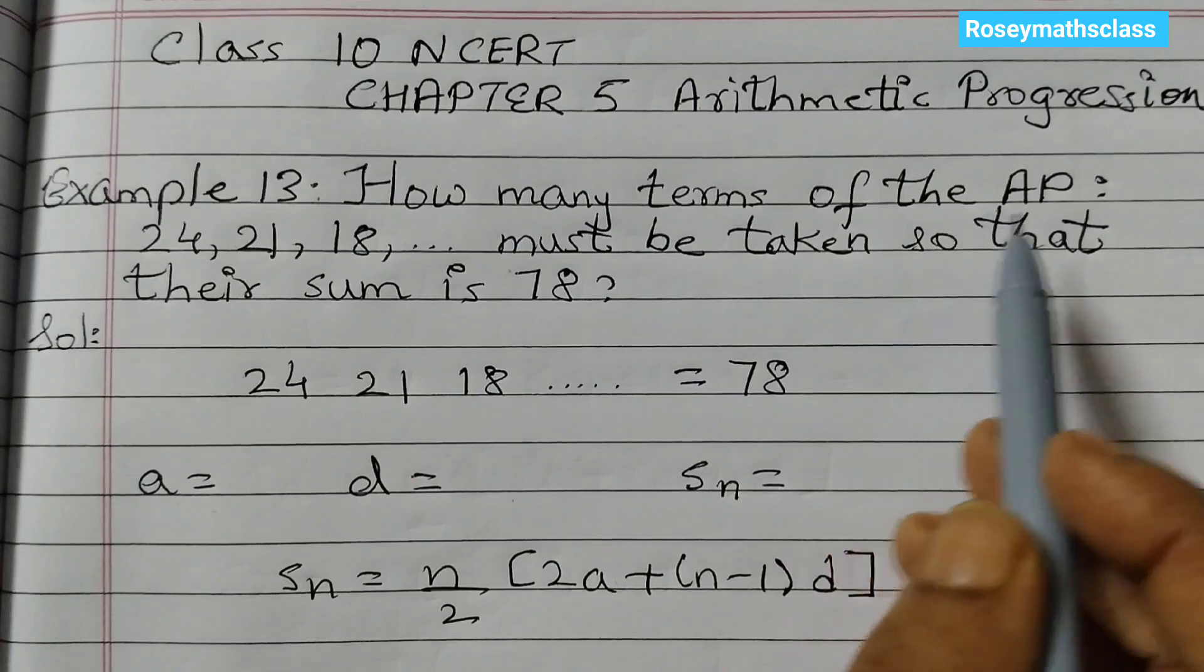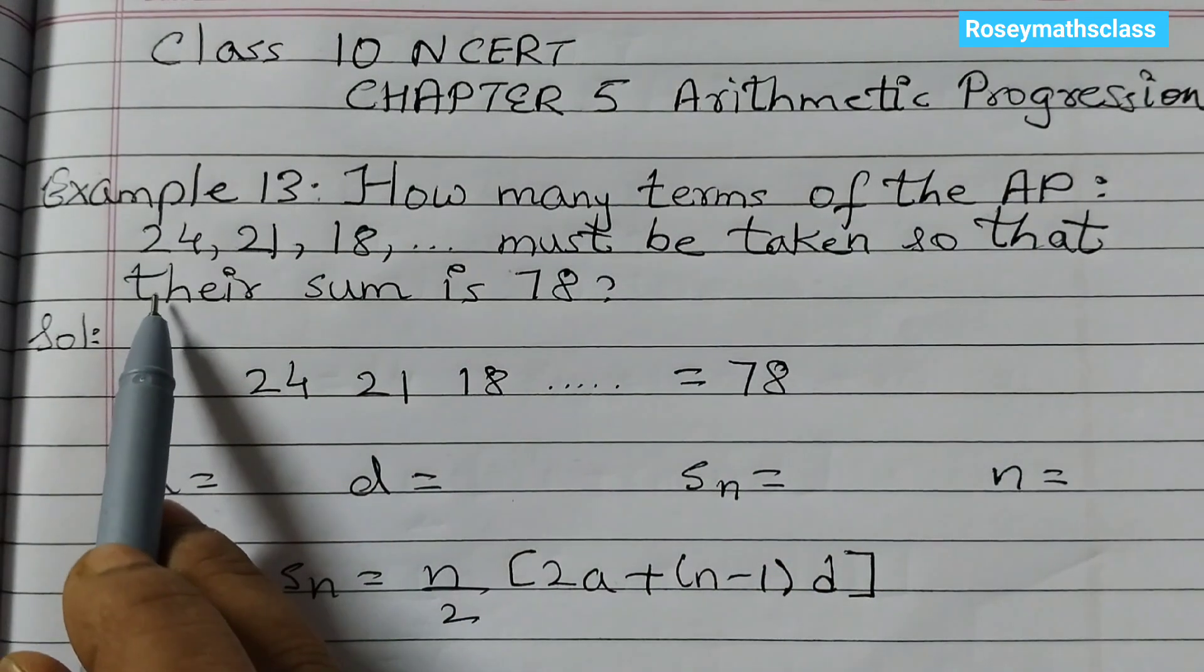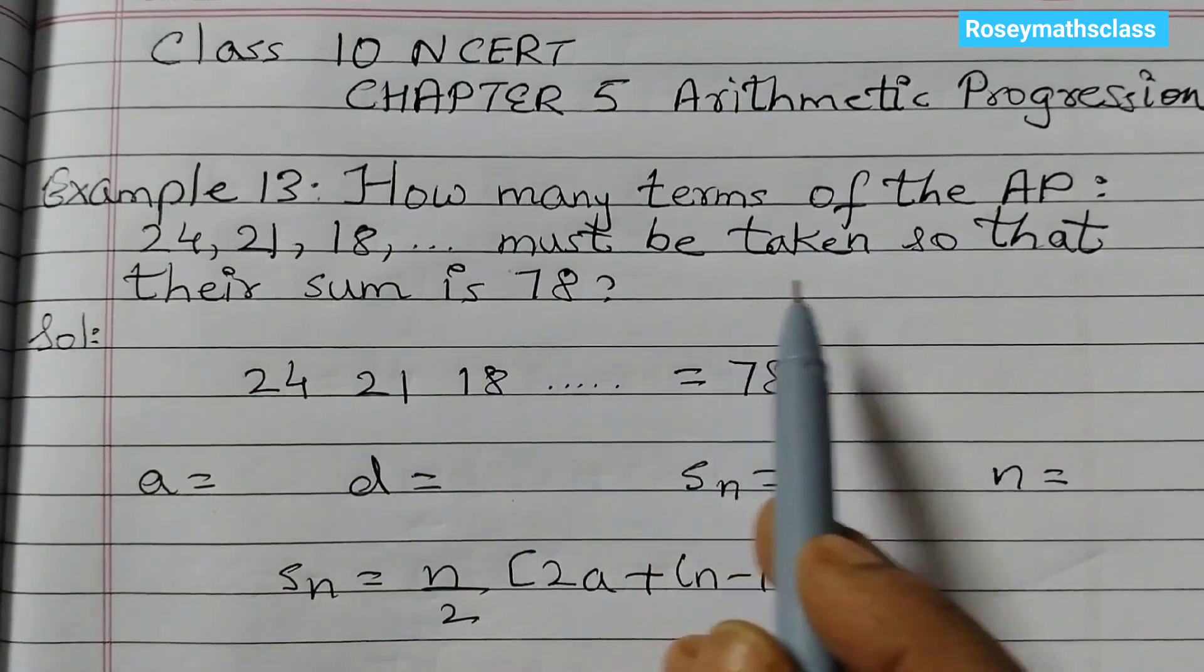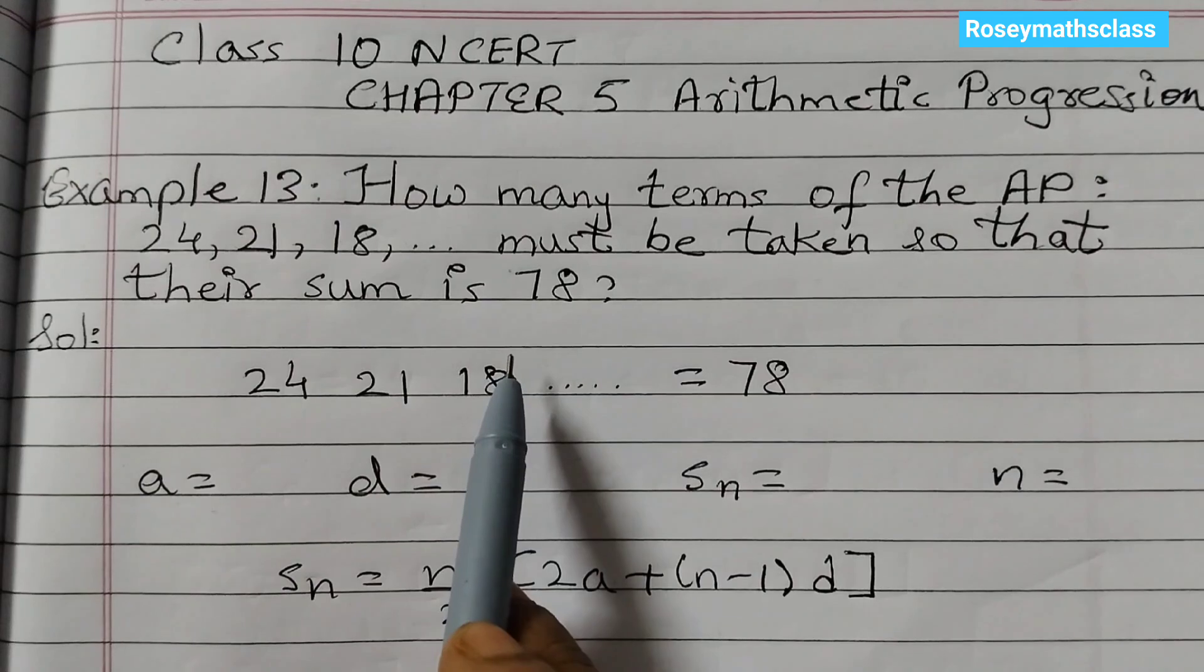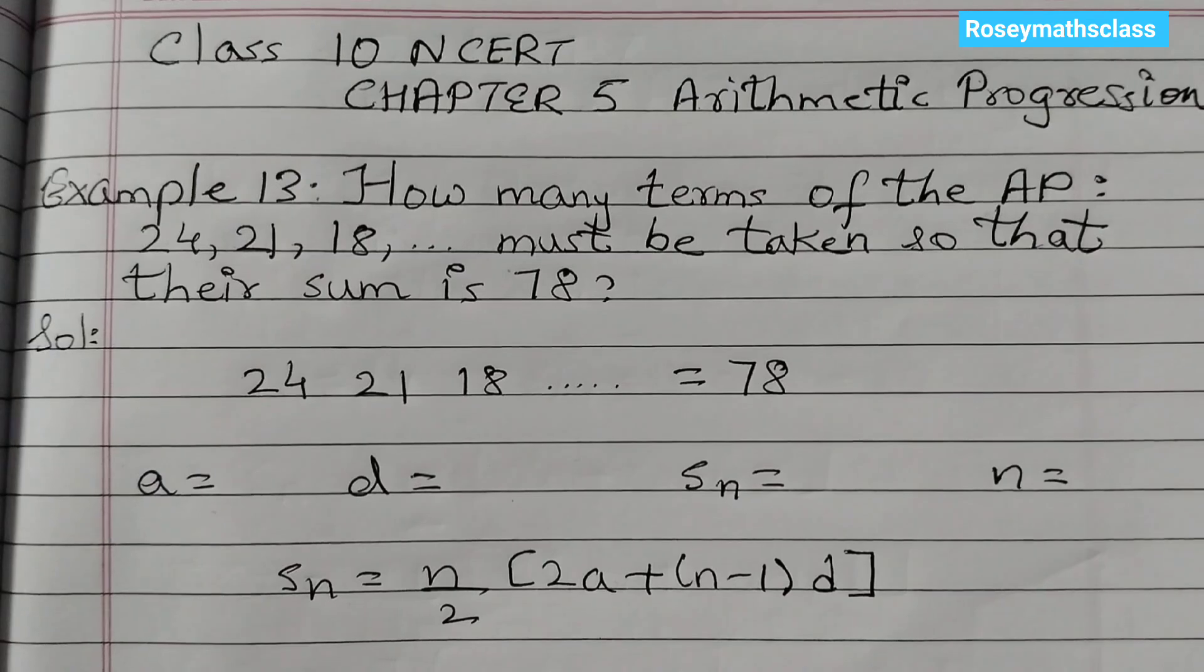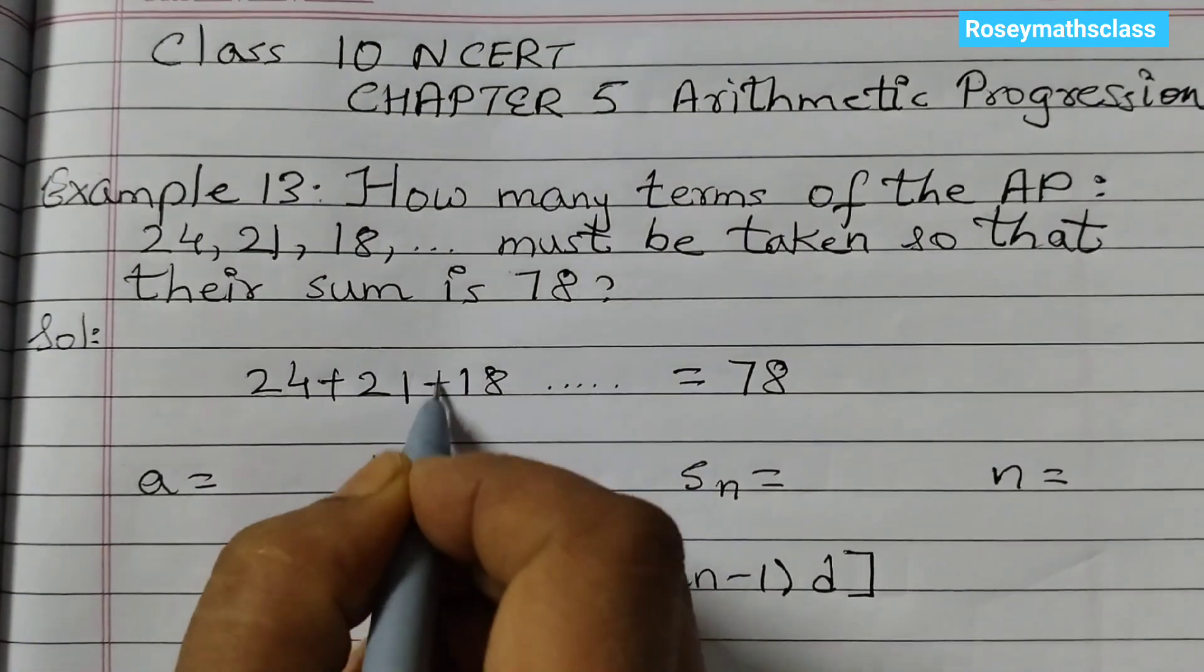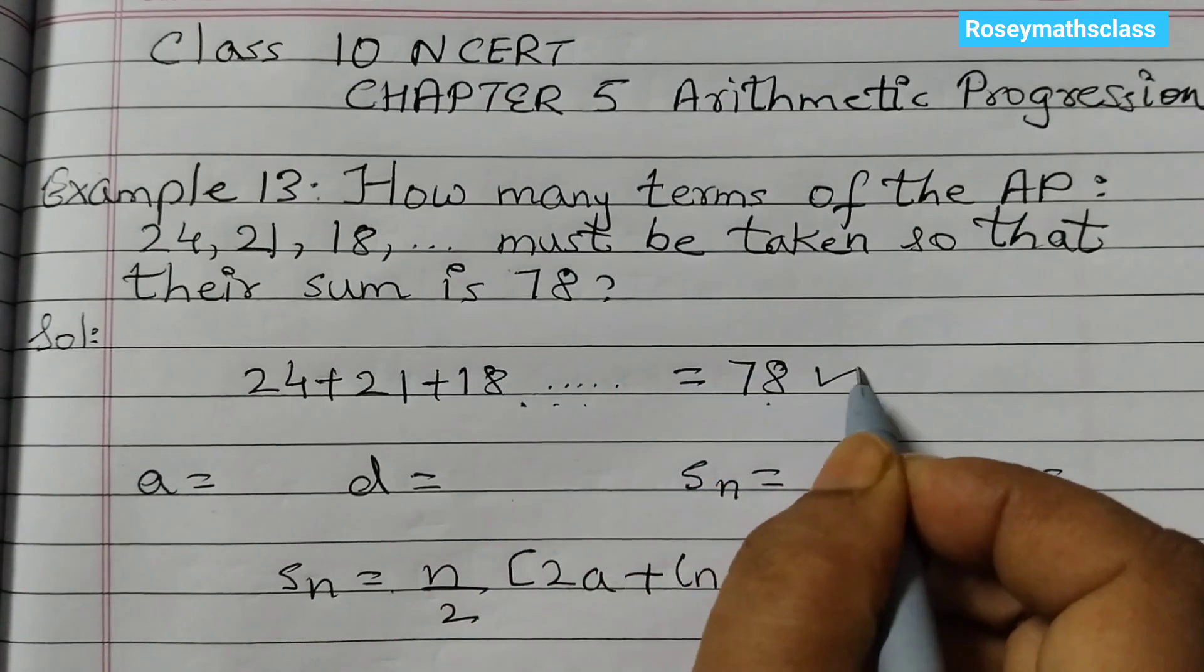How many terms of the AP, AP means arithmetic progression, 24, 21, 18 and so on must be taken so that their sum is 78. So we need to find out how many terms do we need in this AP so that when we add all these terms like 24 plus 21 plus 18 and how many more terms do we need so that we get 78.